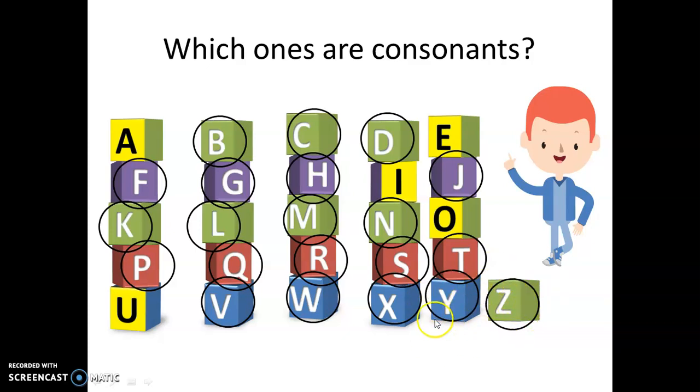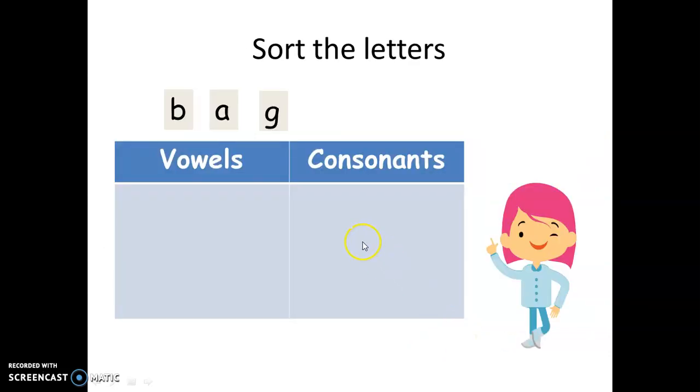So, these are consonants. Now, can you sort the letter? Look at B. Where does the B go to? Which group? Is it the vowels group or the consonant?